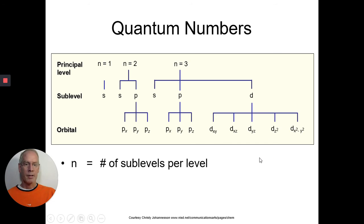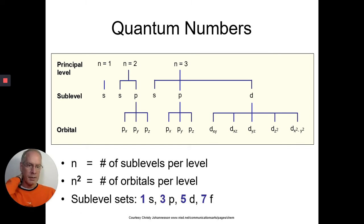So N is the number of sublevels. N squared is the number of orbitals. See, if you do two squared, you get four, don't you? So you would get an S orbital and three P orbitals. So that would be four orbitals. When you do three squared, well, three squared is nine. You get one, two, three, four, five, six, seven, eight. And then the S orbital is the ninth one. All right. So let's keep looking.